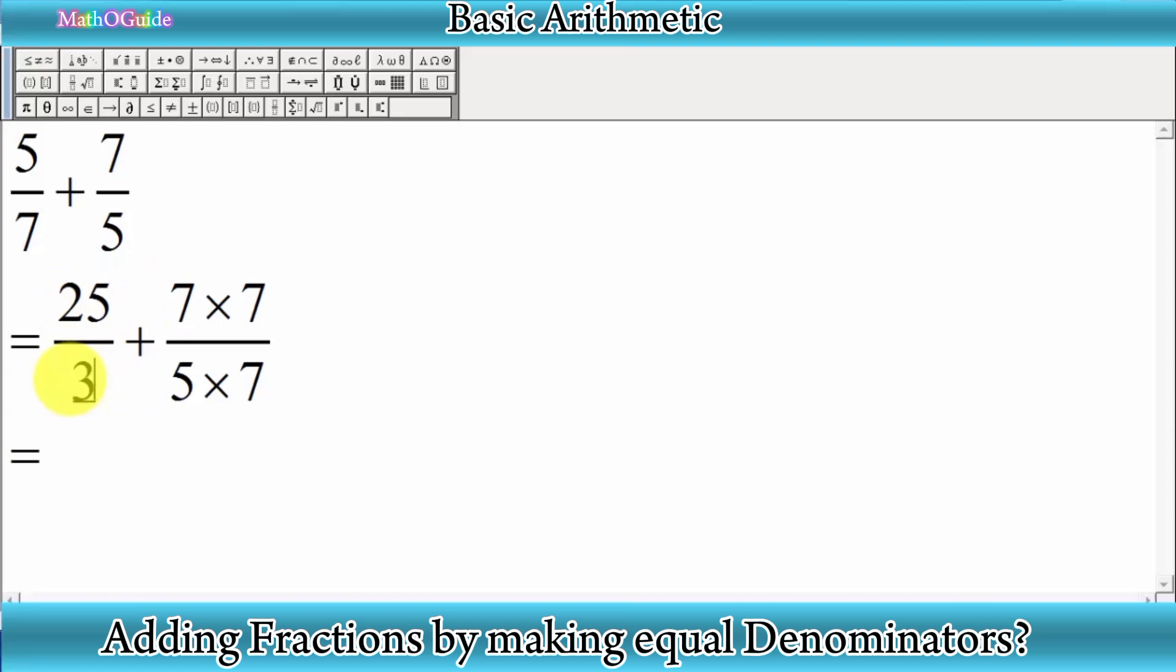equals 35. Similarly, here you can see we have the same denominators again. So we can write 35 below the bar, which is the denominator of our answer. Then you have to add 25 and 49.